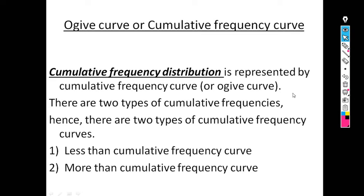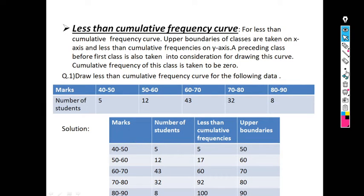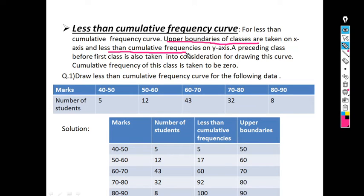We will first start with the less than cumulative frequency curve. For the less than cumulative frequency curve, we require upper boundaries of classes on the x-axis and less than cumulative frequency on the y-axis. For the data, we have to first calculate these two values: upper boundaries and less than cumulative frequency. In the previous lecture, we already saw how to find less than cumulative frequency.